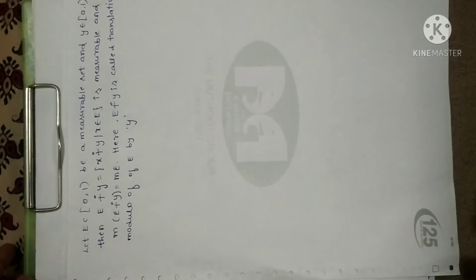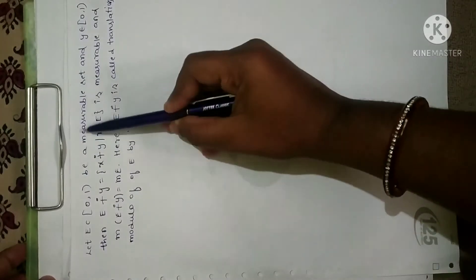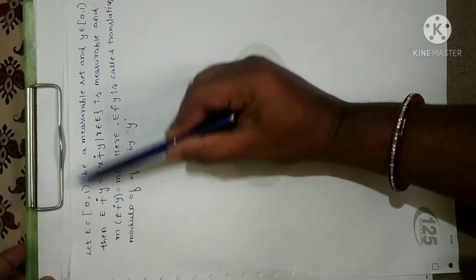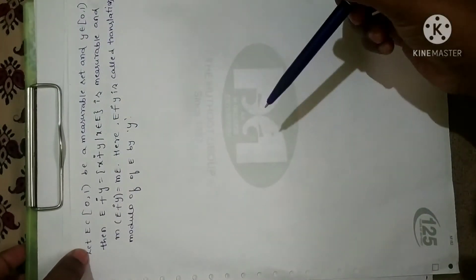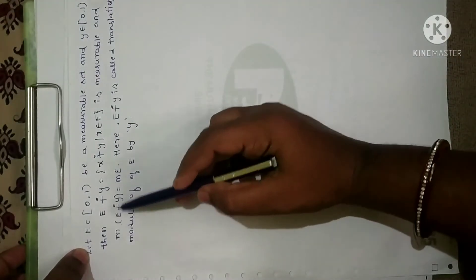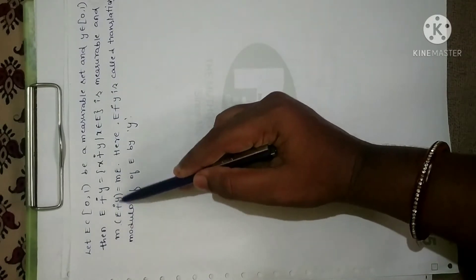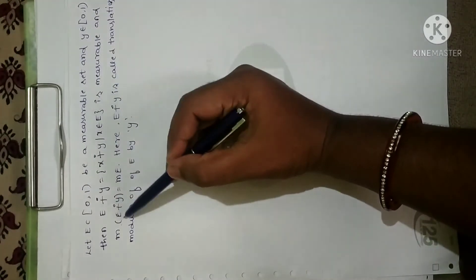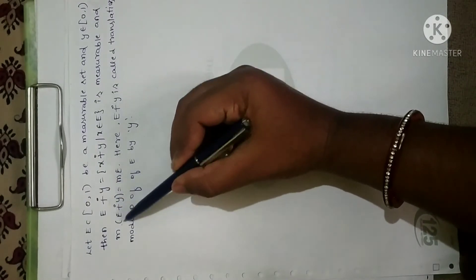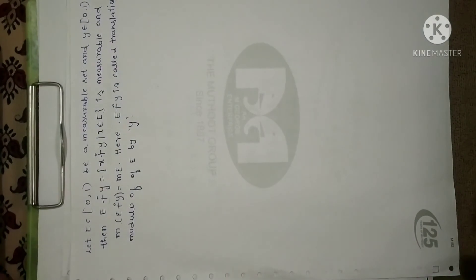Based on this concept we have a theorem: Suppose E is an open set contained in [0,1) which is measurable, and y is any element in that interval. Then the translation modulo E ⊕ y is measurable, and the measure of E ⊕ y equals m(E). We read E ⊕ y as translation modulo of E by y. Now let's proceed to the proof.